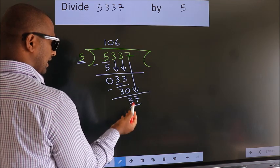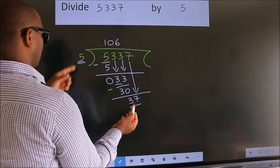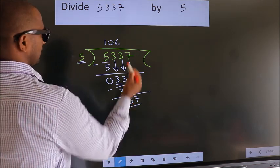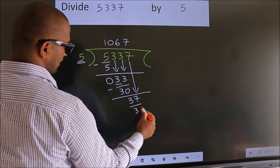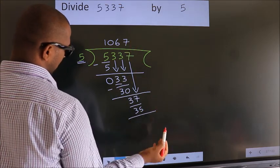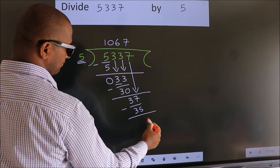So, 37. A number close to 37 in 5 table is 5 sevenths, 35. Now we subtract. We get 2.